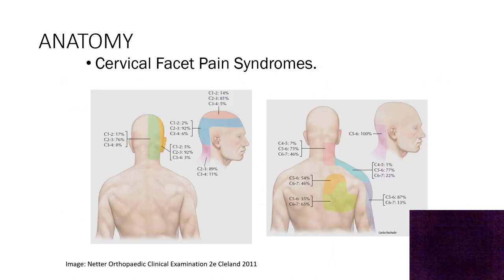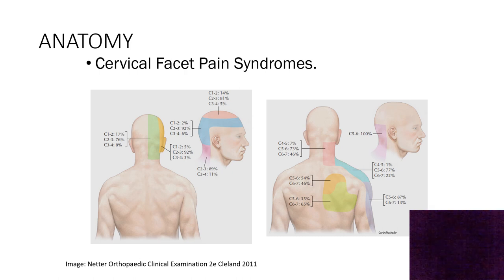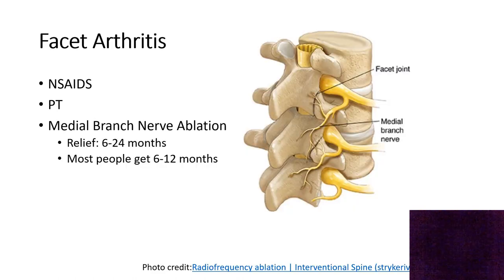When discussing facet pain — posterior column pain syndrome — looking up can cause arthritic joint pain at the level where you have the arthritis. It also has the feature of referring to other places along your back and arm depending on the level of arthritis. People who come in with periscapular pain or pain around the scalp with no definitive reason, but who also have neck pain, likely have joint arthritis presenting as referred pain into the shoulders and head.